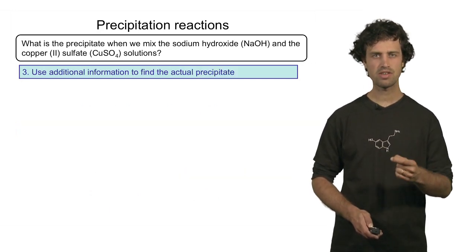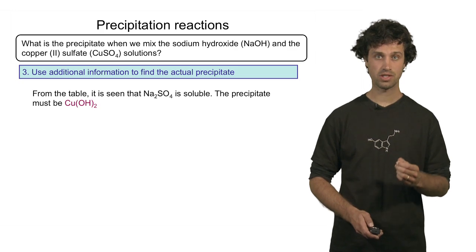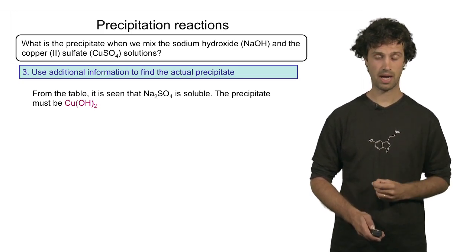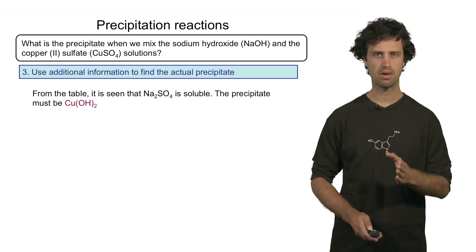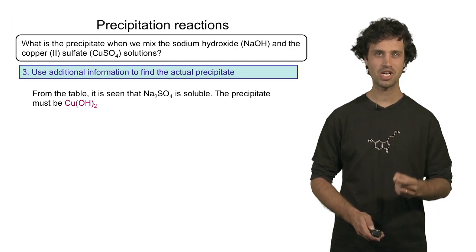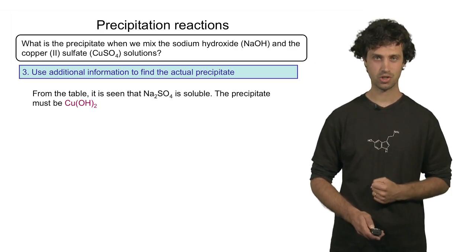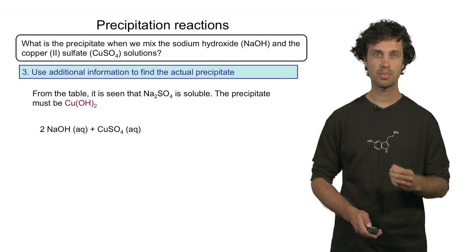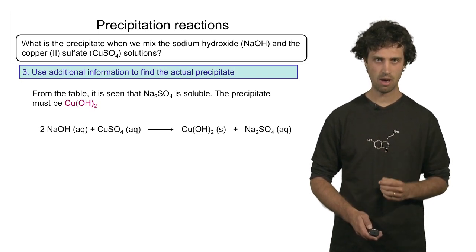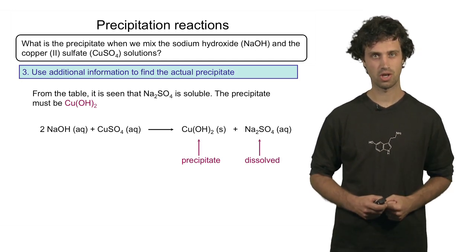We need more information, and this information can be obtained from the solubility table. In the solubility table we find that compounds that contain the alkali metal ion are generally soluble. Now, sodium sulfate contains an alkali metal ion, the sodium ion. So this compound is soluble. The precipitate therefore must be the other compound, which is copper hydroxide. And indeed, the solubility table says that hydroxides are generally insoluble compounds. We thus find the following reaction: sodium hydroxide reacting with copper sulfate, producing solid copper hydroxide and sodium sulfate. Of these two products, the precipitate is the solid copper hydroxide, and sodium sulfate is still fully dissolved in solution.